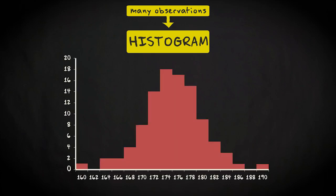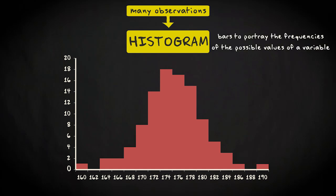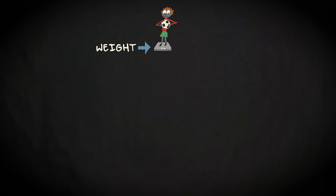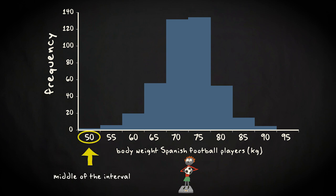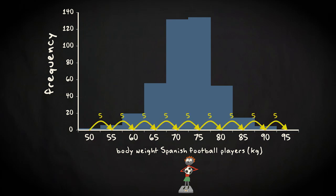Here you see one. A histogram is similar to a bar graph in the sense that it uses bars to portray the frequencies, or relative frequencies, of the possible values of a variable. However, there is one important difference: the bars in a histogram touch each other. This touching represents that the values of an interval ratio variable represent an underlying continuous scale. Say we are interested in the body weight of Spanish football players. If we have very detailed measures of weight, like 83.9 or 74.5 kilograms, it doesn't make sense to draw a separate bar for every single value. Instead, we construct intervals. In this graph, we have 10 intervals of 5 kilograms. The first interval ranges from 47.5 to 52.5 kilograms, and 50 is displayed because it is the middle of that interval. There are no fixed rules for how many intervals to make. However, it is important that the intervals have equal widths — in this case, always 5 kilograms.